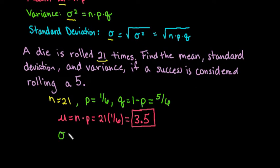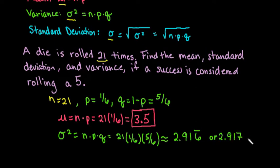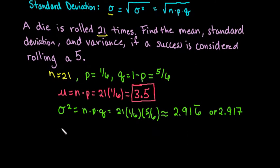The next thing we're going to find is the variance. The variance is n times p times q, so we take 21 times 1 sixth times 5 sixths. This rounds to 2.916 repeating — you could write it as 2.917. It's best not to round for the next calculation, because if you do round, your standard deviation may be slightly off.